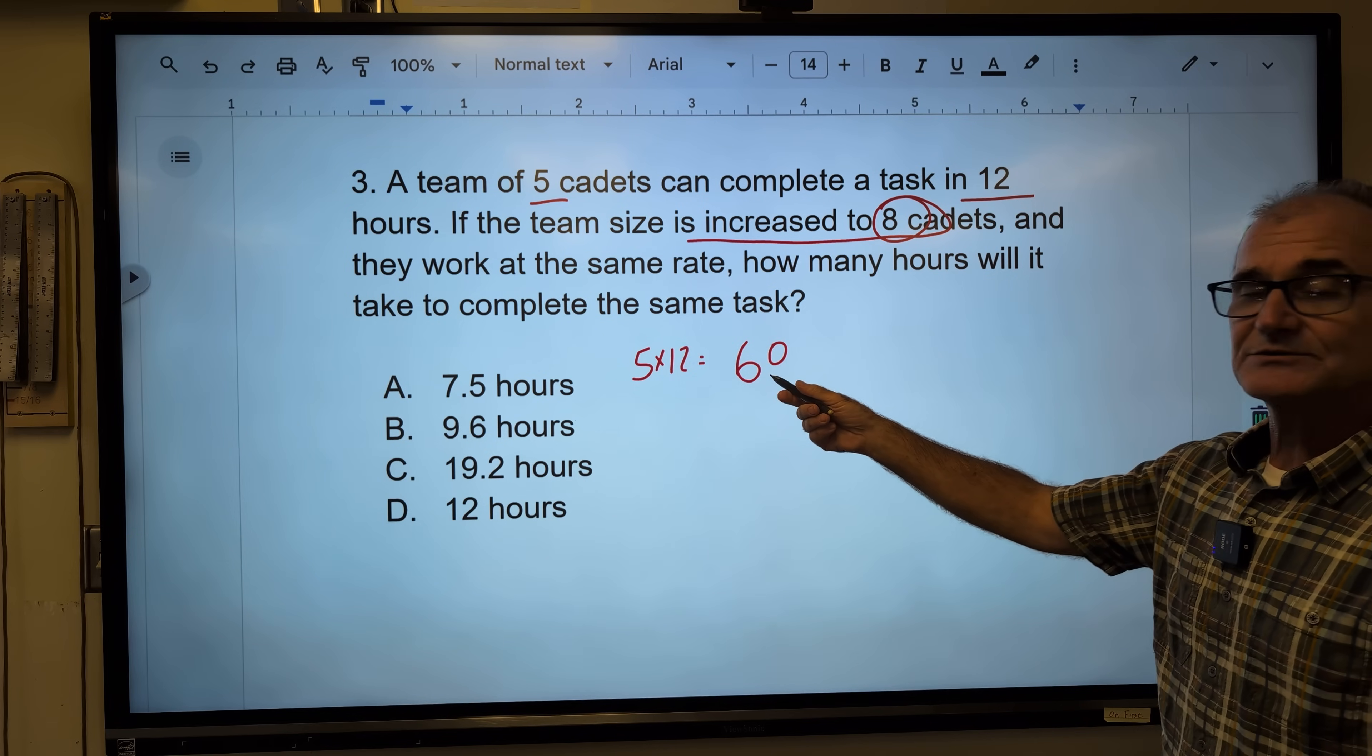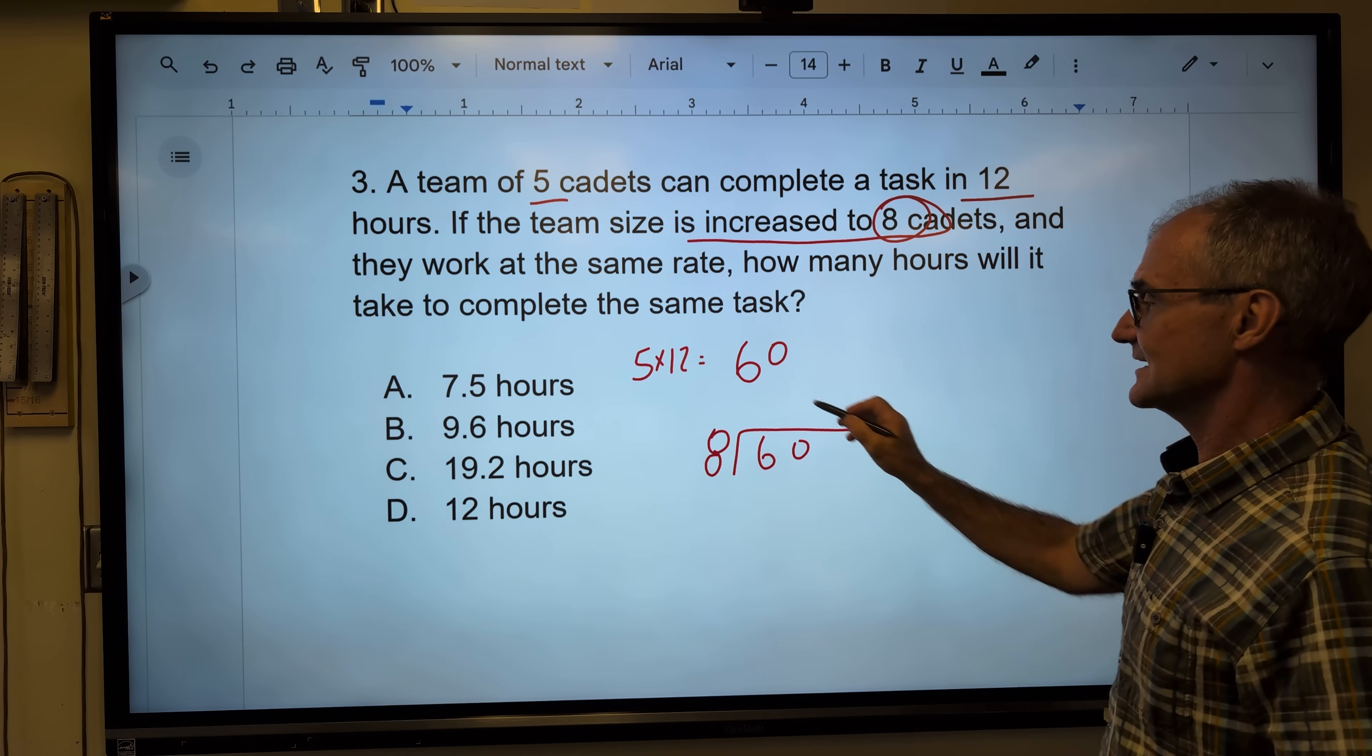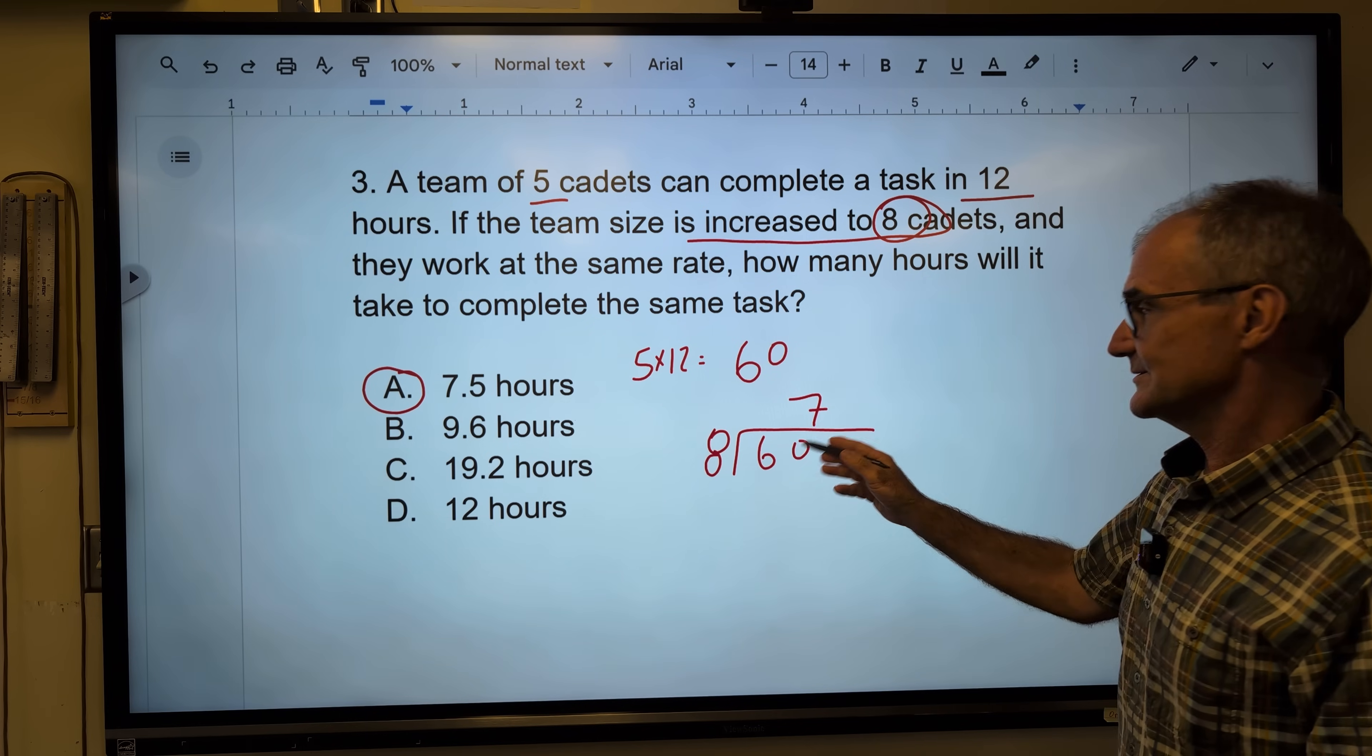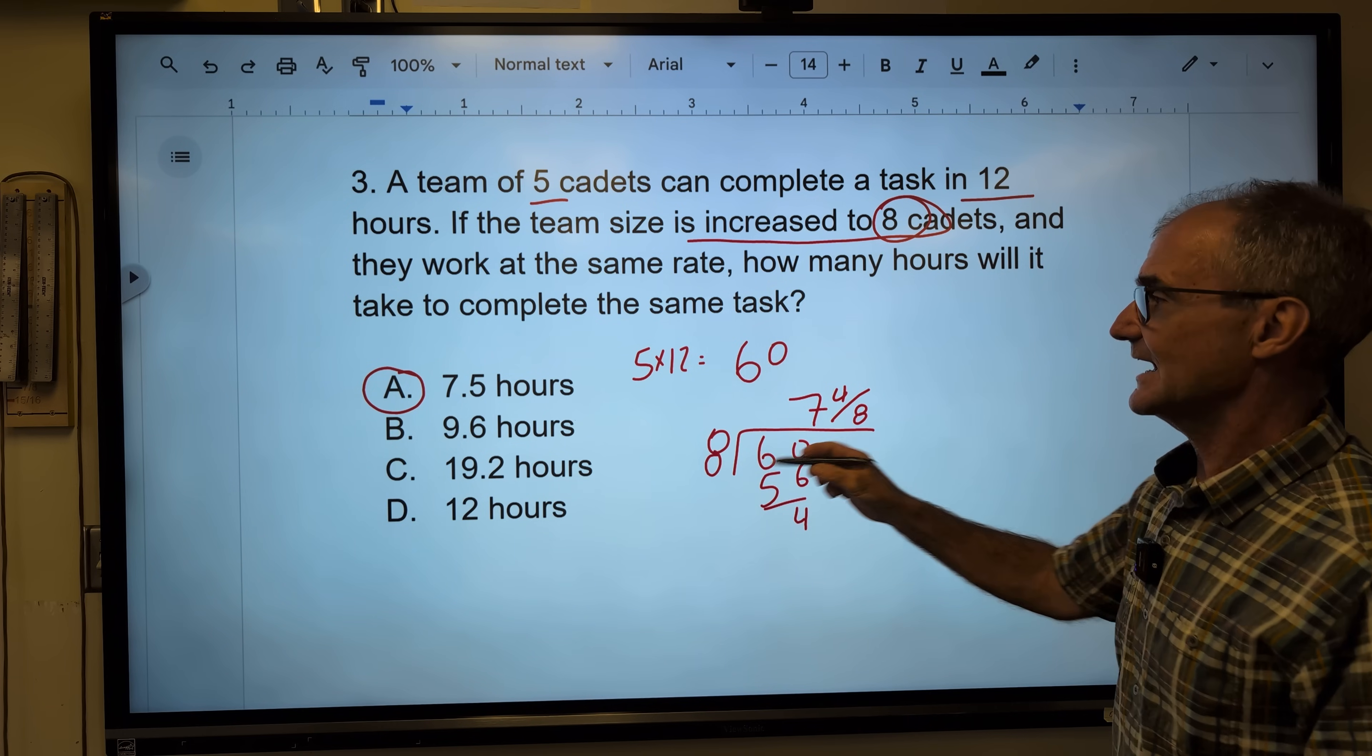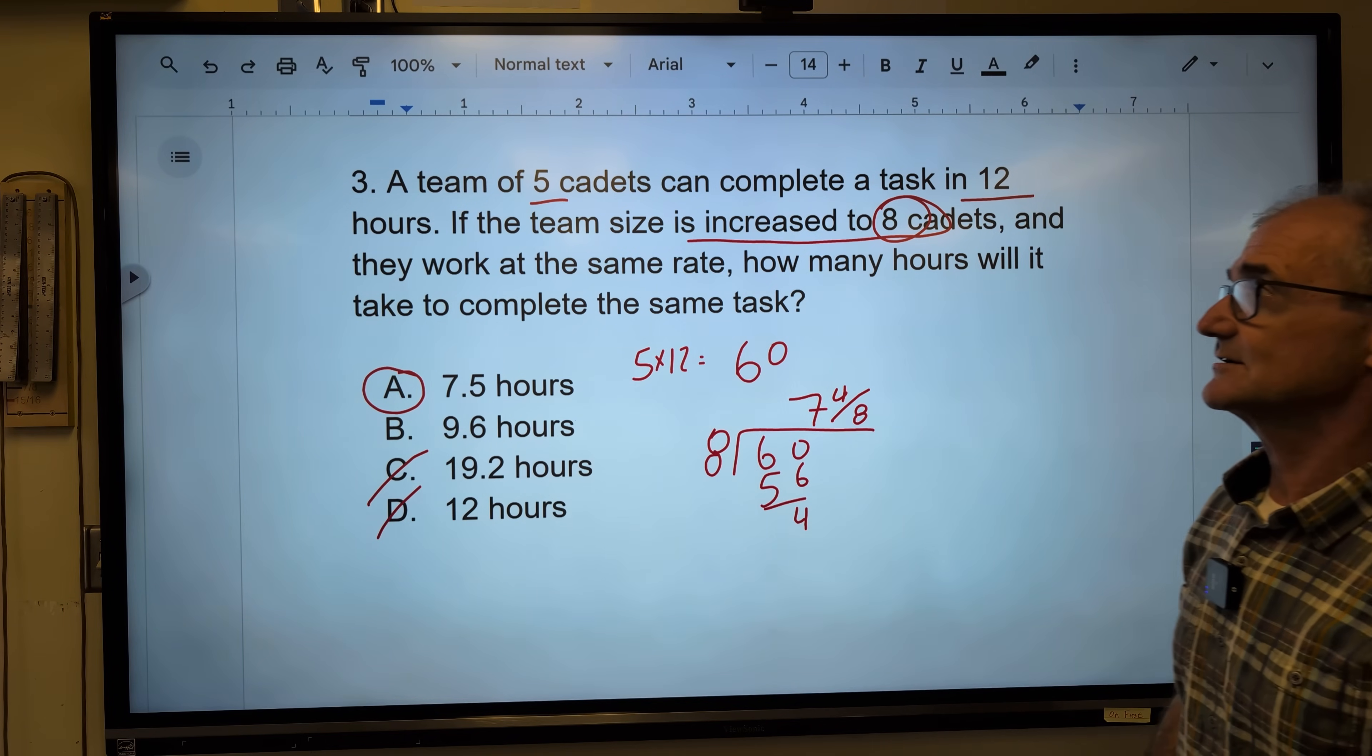The team is now increased to eight cadets. So from five, I go to eight. Well, if I have eight people doing 60 man hours of work, how long will that take? So I want to know how many times eight will go into 60. It'll go in there seven times. I don't even have to go any further than that. Only answer up there with a seven in it is going to be this one. Let me just finish it anyway. Eight times seven is 56. Bring down the four. This is seven and four eighths or seven and a half right there. I know that I got more people doing the job. If I was in 12 hours, it has to be less. So I could have eliminated these answers to start with.